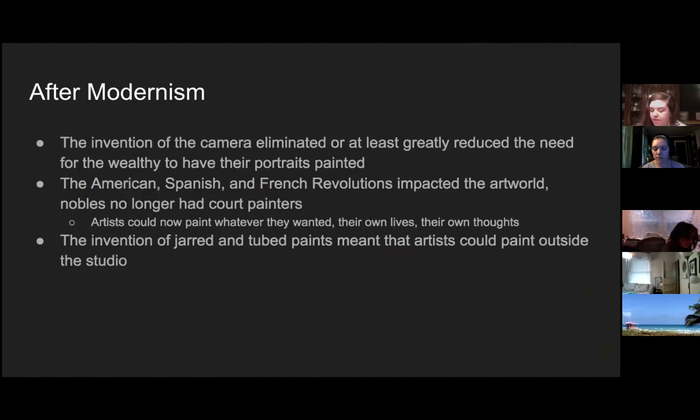Modernism came about for a lot of different reasons. For one, the camera was invented, meaning people who would have hired artists to paint their portraits didn't need to — they could have their portrait taken in an instant and for much cheaper. Second, several influential countries launched revolutions, renouncing their elite, so there wasn't an aristocratic class to patronize the arts. And third, the invention of portable paints in jars and tubes meant that artists could leave the studio and paint wherever they wanted.